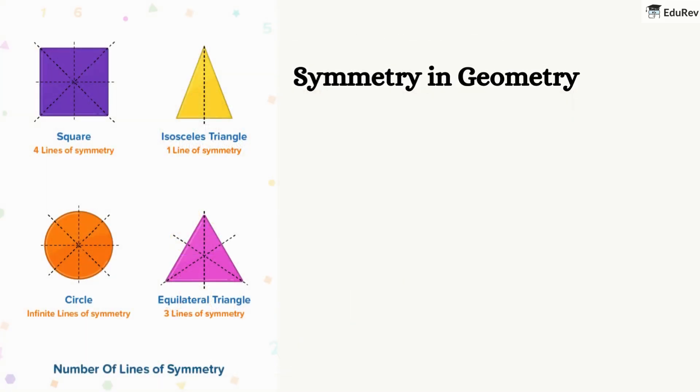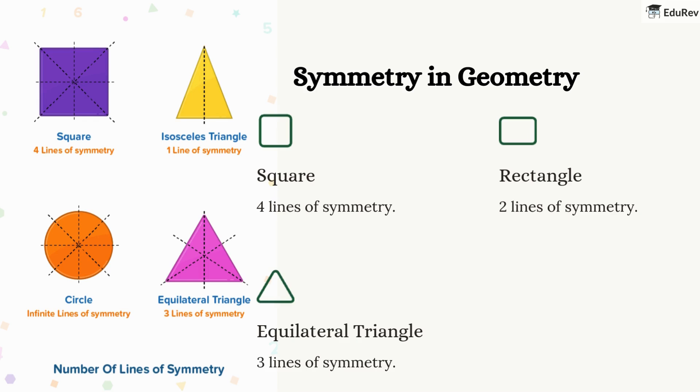Symmetry is also important in geometry. Let's look at some shapes and their lines of symmetry. A square has four lines of symmetry. A rectangle has two lines of symmetry. An equilateral triangle has three lines of symmetry. And a circle - it has so many lines of symmetry that we say it has infinite lines of symmetry. Isn't it amazing how symmetry is everywhere in math?